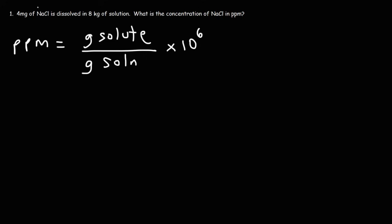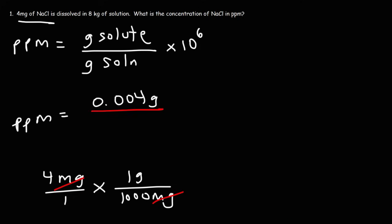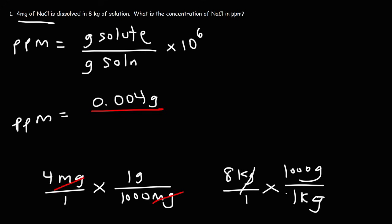In this example problem, we have four milligrams of sodium chloride. We need to convert that to grams. 1 gram is equal to 1000 milligrams, so to convert from milligrams to grams, divide by 1000. So 4 divided by 1000 is 0.004 grams of solute. We also have 8 kilograms of solution. To convert kilograms to grams, multiply by 1000, so 8 kilograms is 8,000 grams.